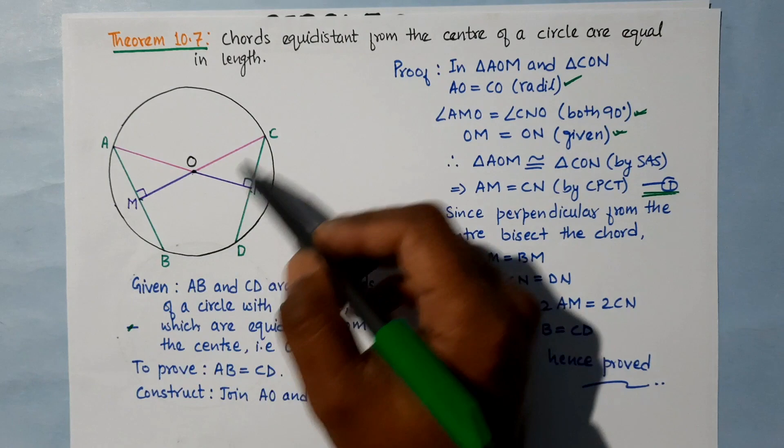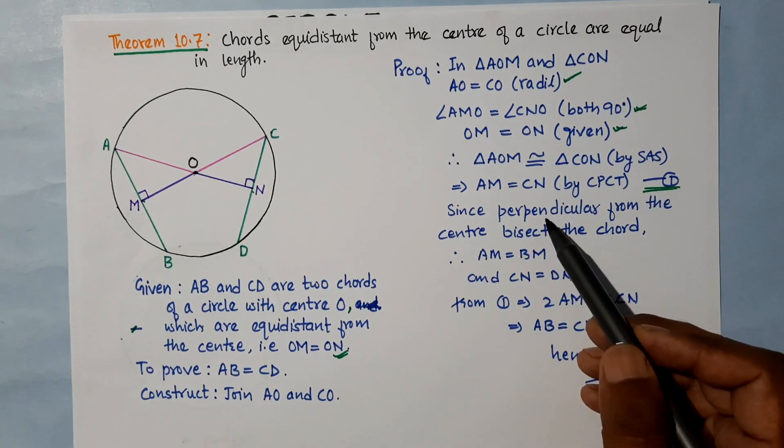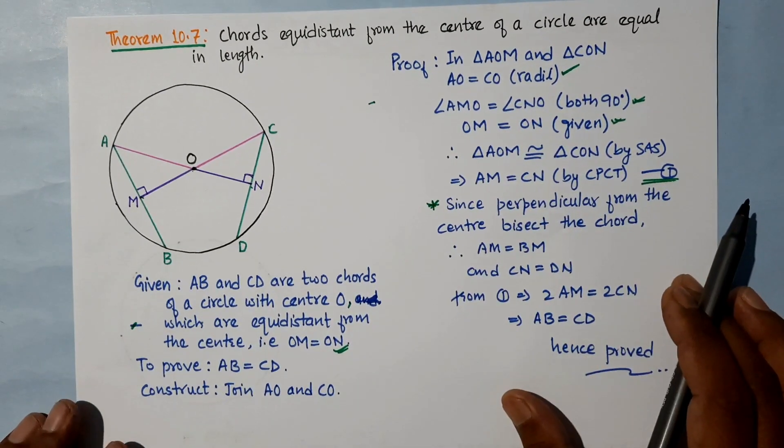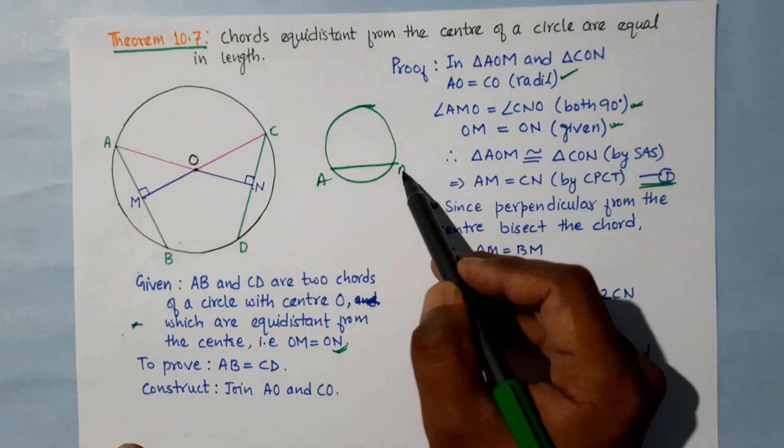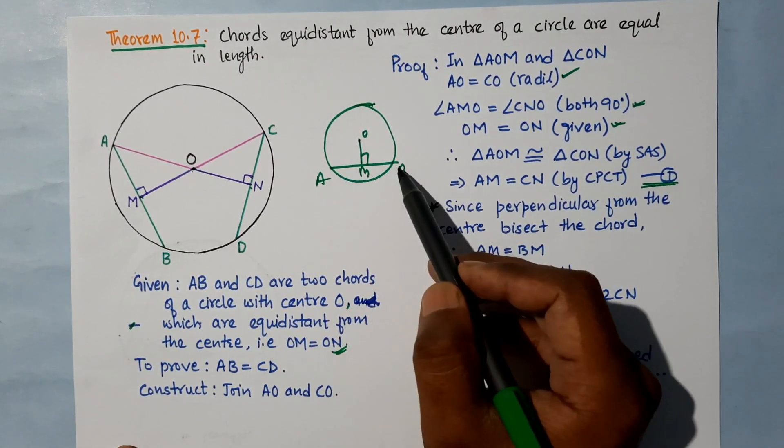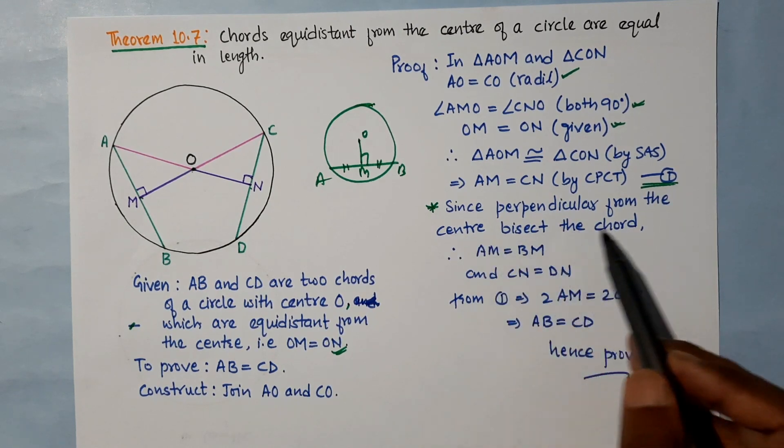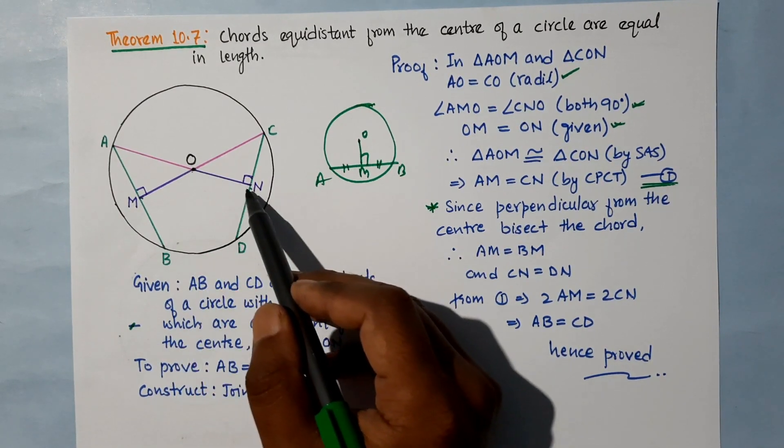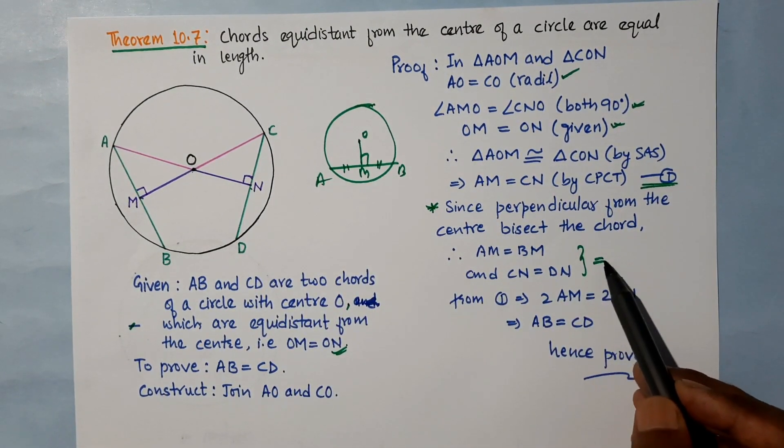We have to prove AB is equal to CD. Now there's a theorem that perpendicular from the center bisects the chord. Since OM is perpendicular to AB, AM is equal to BM. Similarly, since ON is perpendicular to CD, CN is equal to DN.